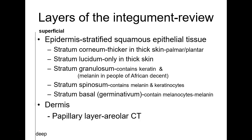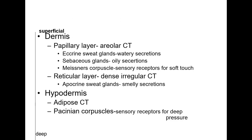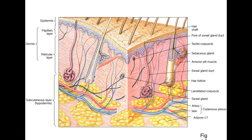To review: the epidermis has five strata, the dermis divides into papillary and reticular layers, and the hypodermis contains adipose tissue. Pacinian corpuscles for deep touch can also be found down in the hypodermis region.